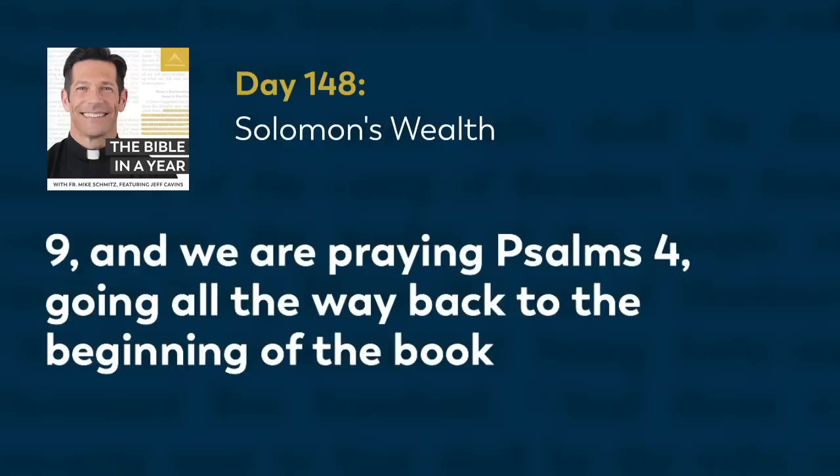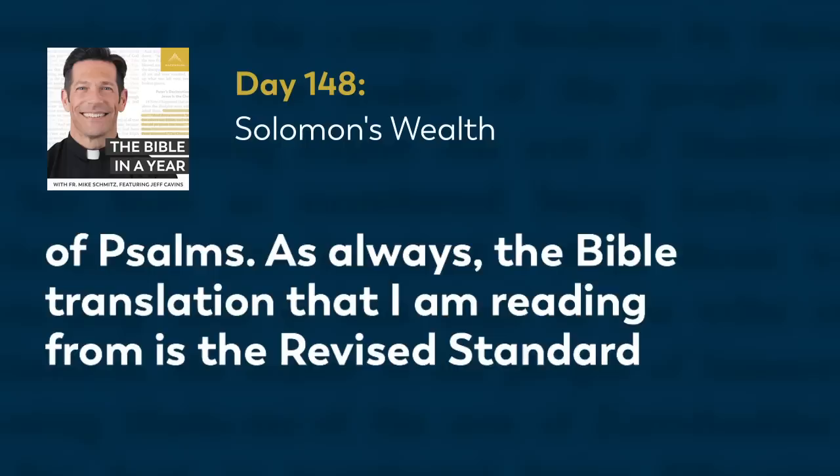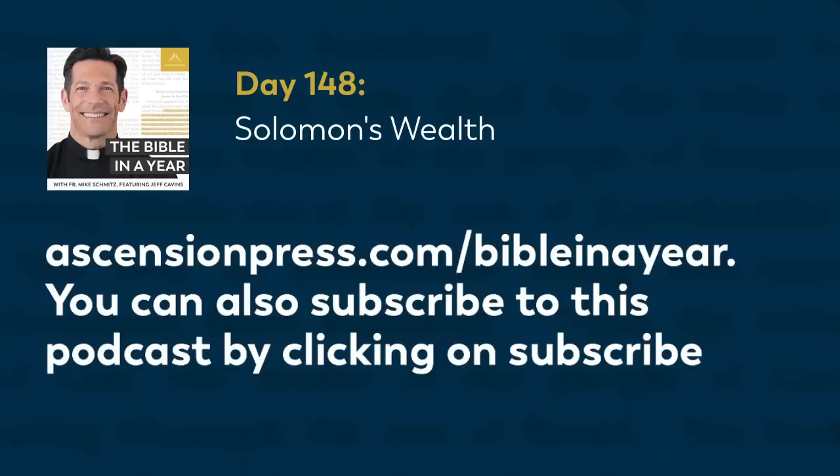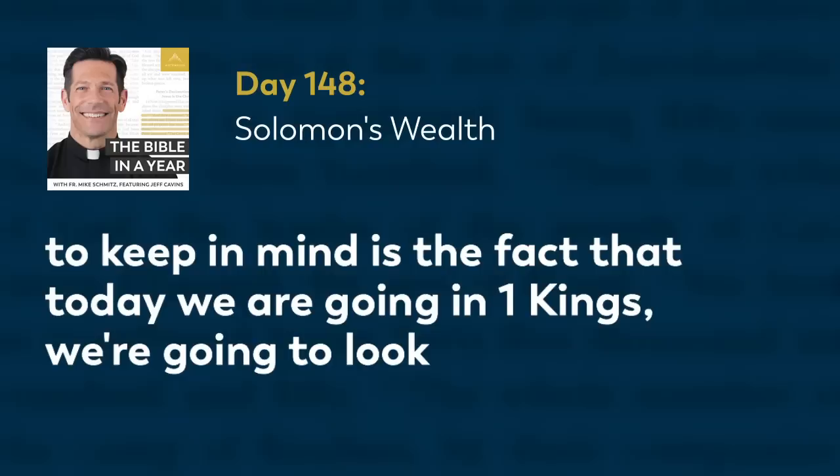We're reading from 1 Kings chapter 6, 2 Chronicles chapter 9, and we are praying Psalm 4, going all the way back to the beginning of the book of Psalms. The Bible translation I am reading from is the Revised Standard Version, the second Catholic edition. I am using the Great Adventure Bible from Ascension. If you want to download your own Bible in a Year reading plan, you can visit ascensionpress.com/bibleinyear. You can also subscribe to this podcast by clicking subscribe in whatever app you are listening to today.